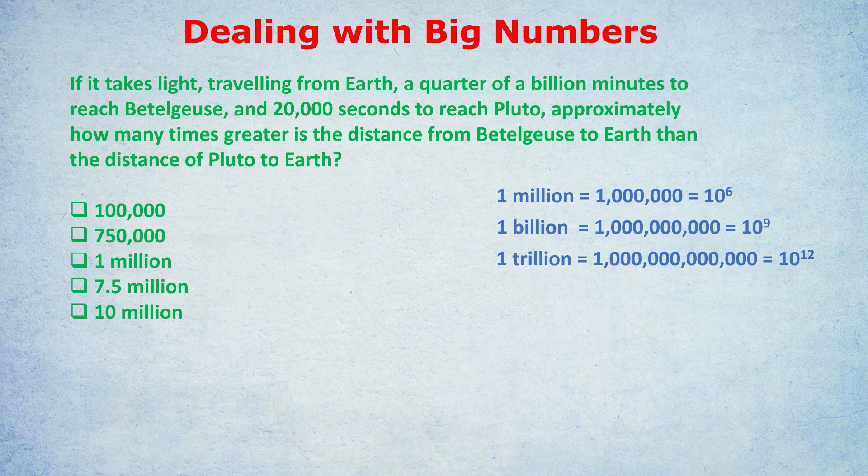My choice is to convert the minutes into seconds. There are 60 seconds in a minute, so if we multiply the number of minutes by 60, we get the number of seconds. A quarter of a billion is 0.25 billion. When we multiply that by 60, 0.25 times 60 gives us 15. So a quarter of a billion minutes becomes 15 billion seconds. Now we're talking about seconds in both cases: 15 billion seconds to reach Betelgeuse, 20,000 seconds to reach Pluto. So we divide these two numbers to get how many times greater the distance is.